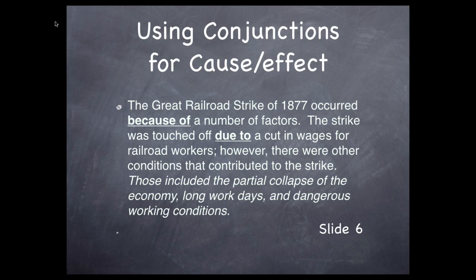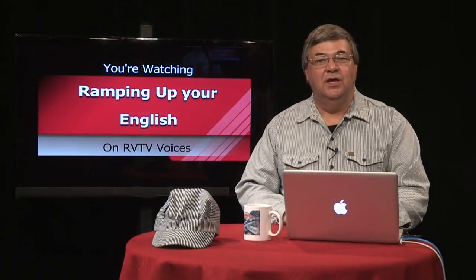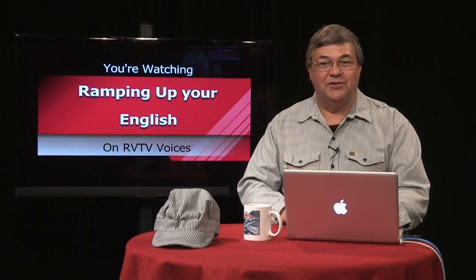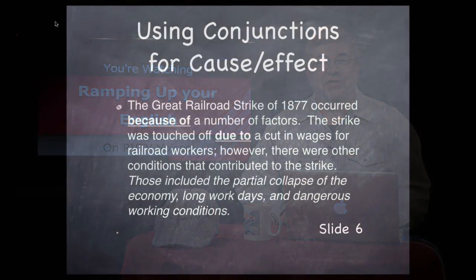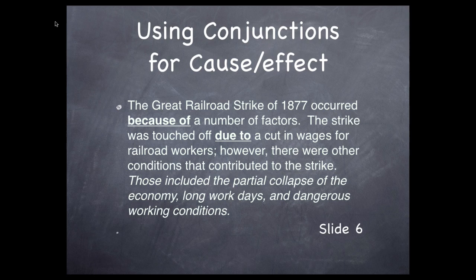However, there were other conditions that contributed to the strike. Those included the partial collapse of the economy, long work days, and dangerous working conditions. Notice we didn't list all the other effects — we could do that depending on how detailed we want it to be. We could add that strikes spread across the country, transportation was disrupted, and there was violence and destruction. No cause-effect conjunctions are needed doing it this way, since we already established a cause-effect relationship in the earlier sentences.